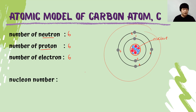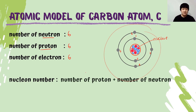How about the nucleon number? The nucleon number is the number of protons plus the number of neutrons. In the case of carbon, the number of protons is 6 and the number of neutrons is 6. Therefore, the nucleon number is 12.